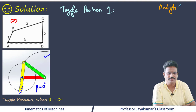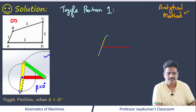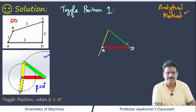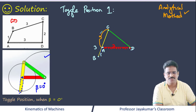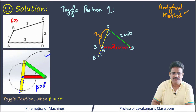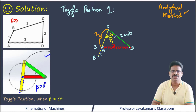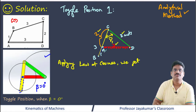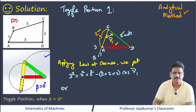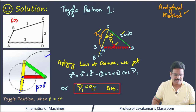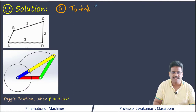This problem can also be solved by both analytical and graphical method, but I am solving it by the analytical method. Let me draw toggle position 1 — not to scale since I am doing the analytical method. The total length of the combined crank and coupler is 3 units; the crank is 1 unit, leaving 2 units. We need to determine the transmission angle for toggle position 1. By applying the law of cosines, on simplification I am getting 97.19 degrees.